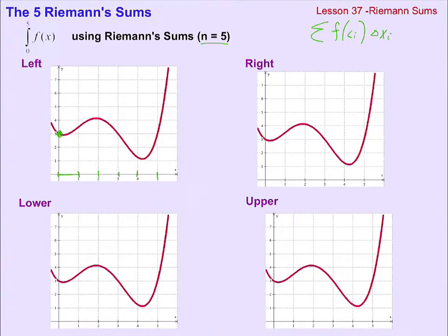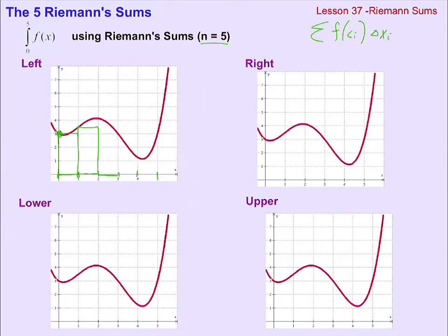A left Riemann sum chooses the y value from the leftmost point of every interval. So for this first interval from zero to one, I will choose the y value from here, which is about three, and make a product of that y value times that x distance. For the second interval from one to two, I will use the x value farthest on the left, which would be one, to find the y value — or f of one — and use that to make my product of y times dx. I will keep doing that for every interval, so from two to three I will choose the x value farthest on the left to pick the y value.